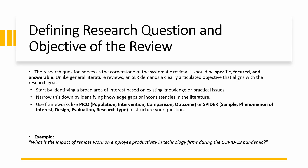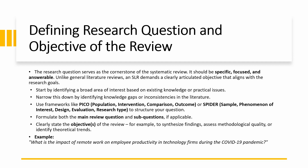Use frameworks like PICO — population, intervention, comparison, outcome — or SPIDER — sample, phenomenon of interest, design, evaluation, research type — to structure your question. We are going to look into these frameworks and into PRISMA as well. Formulate both main review questions and sub-questions if applicable, and clearly state the objectives of the review — for example, to synthesize findings, assess methodology quality, or identify theoretical trends. An example research question is: what is the impact of remote work on employee productivity in technology firms during the COVID-19 pandemic?